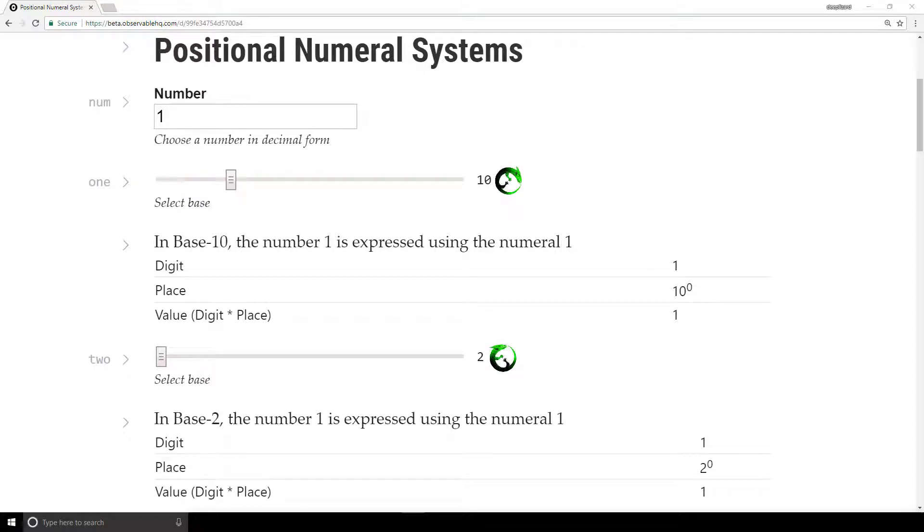What's going on everyone? I'm here in a notebook that I set up to allow us to explore positional numeral systems. The capabilities of this notebook extend beyond bases 10 and 2, but we'll stick with decimal and binary for this video. The link to this notebook is publicly available so you can experiment with it yourself. Link in the description.